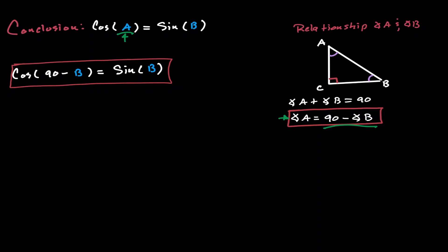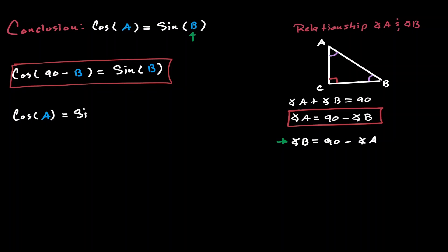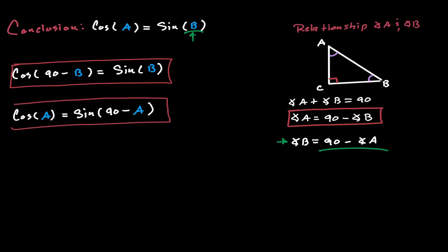We could have gone the other way around as well. In our identity, if instead of solving for angle A we solve for angle B, we get that angle B is equal to 90 minus angle A. Plugging this new expression for B into the sine function, we obtain that the cosine of angle A is equal to the sine of 90 minus angle A. And here we have our second identity.